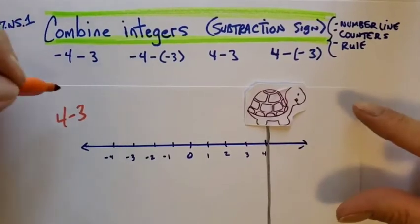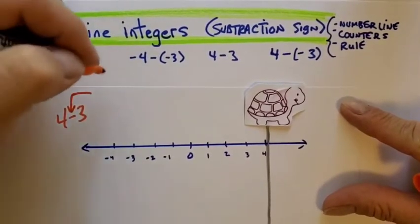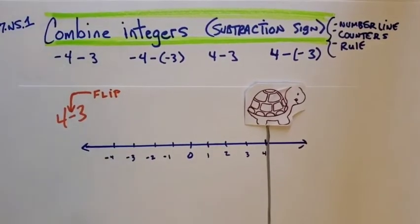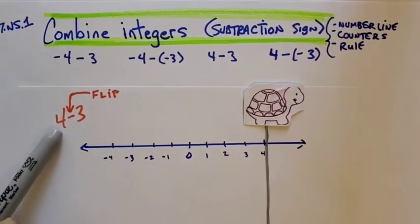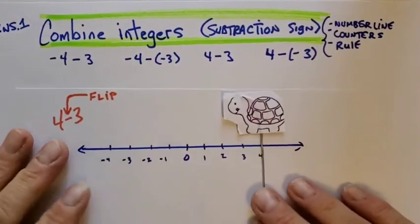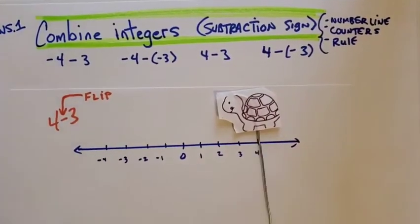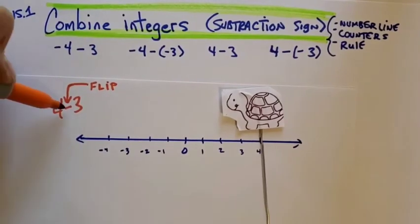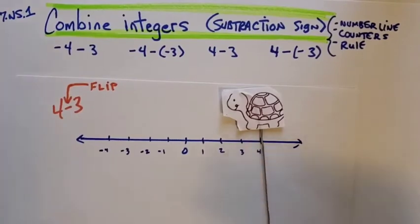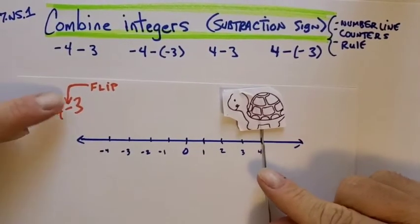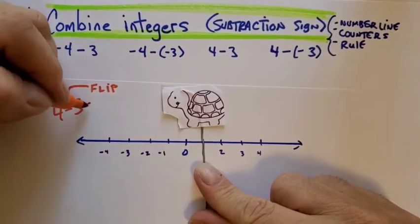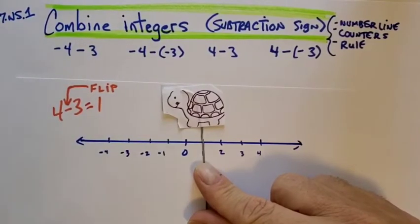Now, this is 4 take away 3. Whenever you see a subtraction sign, think about it as you're going to flip — Trini the turtle is going to flip, meaning switch directions. We went out to positive 4, now we flip. Then it says go forward 3. Since we're pointing the other direction, forward 3 lands us at 1. That's how we get our answer: 4 take away 3 is 1.